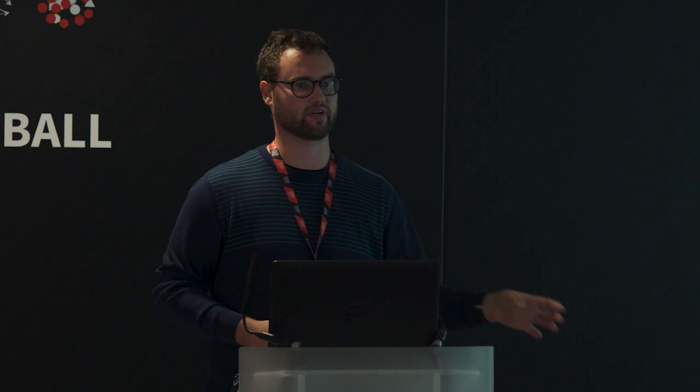Our VAEP framework stands for Valuing Actions by Estimating Probabilities. It values actions by their expected impact on the score. The intuition is that a good action for a specific team should increase the short-term probability of scoring a goal and/or decrease the short-term probability of conceding a goal. The VAEP formula puts this intuition into mathematical terms: it's the delta in probability of scoring from one game state to another, minus the same thing for conceding.